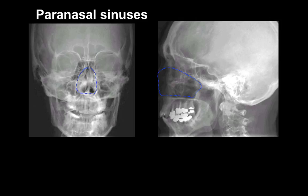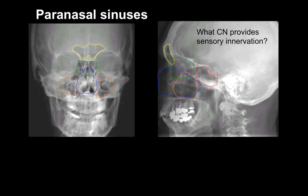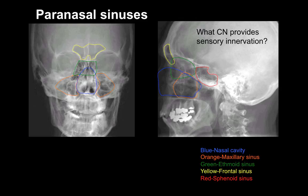Looking at an anterior and lateral X-ray: in blue is the nasal cavity, in red are the maxillary sinuses, in green are the ethmoid sinuses, in yellow is the frontal sinus, and in red is the sphenoid sinus. The nerve that innervates these paranasal sinuses is the trigeminal nerve, primarily V1 and V2. The key shows the nasal cavity, maxillary, ethmoid, frontal, and sphenoid sinuses.